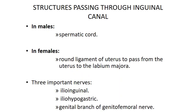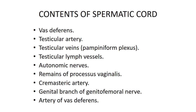Contents passing through the inguinal canal: in males, the spermatic cord; in females, the round ligament of the uterus passing from the uterus to the labia majora. Three important nerves: ilioinguinal, iliohypogastric, and the genital branch of the genitofemoral nerve. Contents of the spermatic cord include: vas deferens, testicular artery, testicular veins, pampiniform plexus, testicular lymph vessels, autonomic nerves, remains of processus vaginalis, cremasteric artery, genital branch of genitofemoral nerve, and artery of vas deferens.